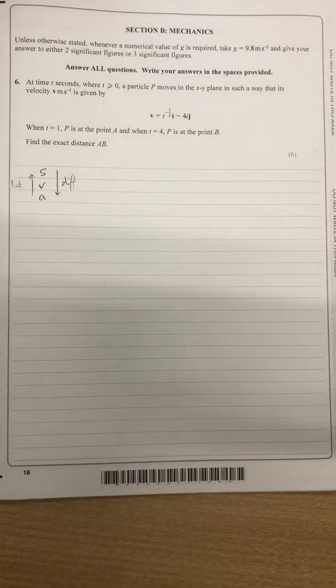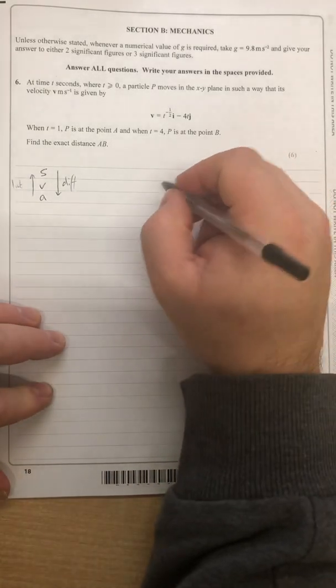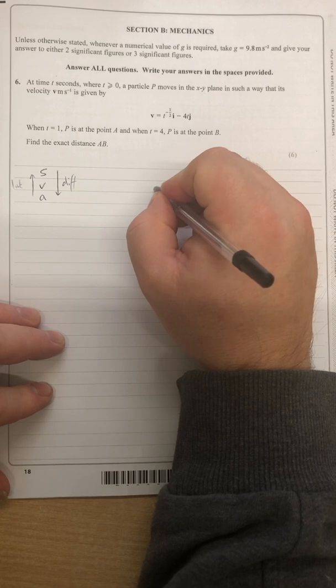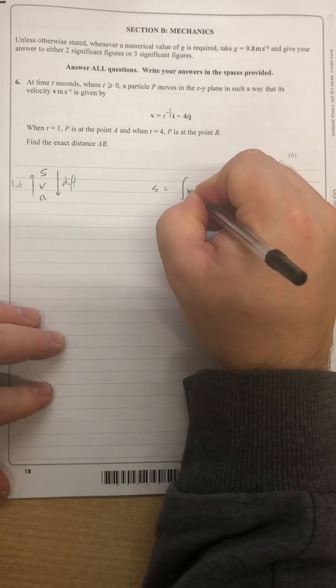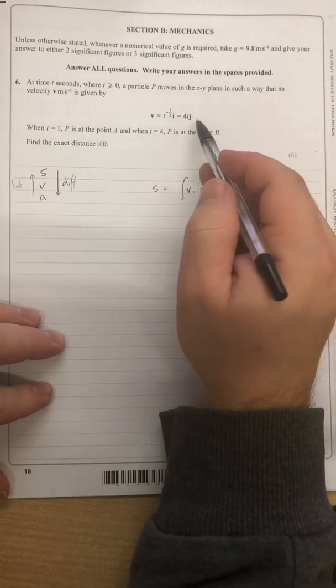So that is using all the clues that I've got there to tell me which mathematics I'm going to have to employ at first. So if I want to go to s, I'm going to have to integrate v with respect to time. Let's do that then on this function.